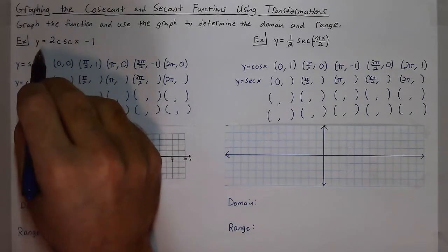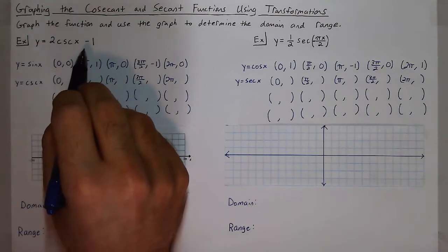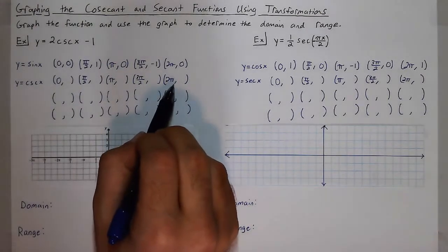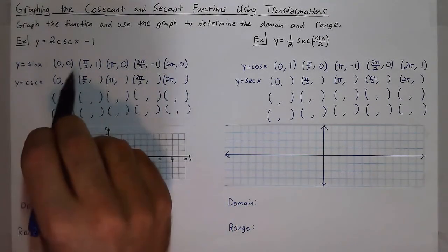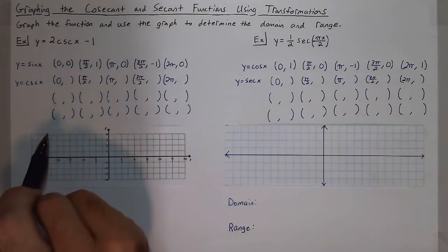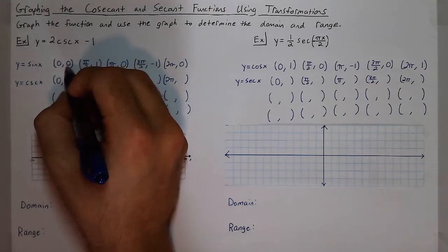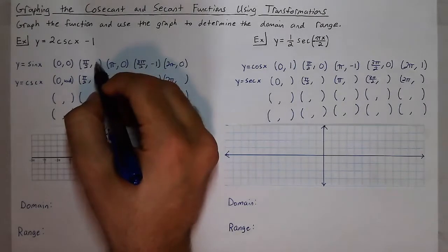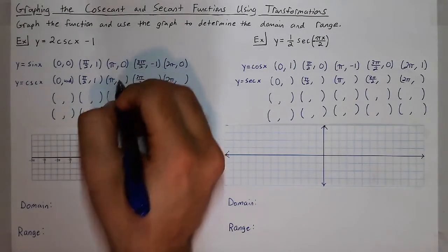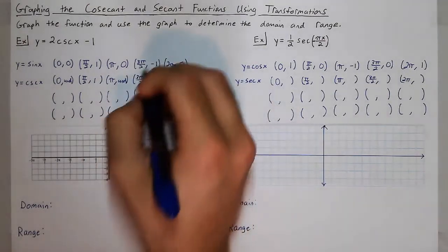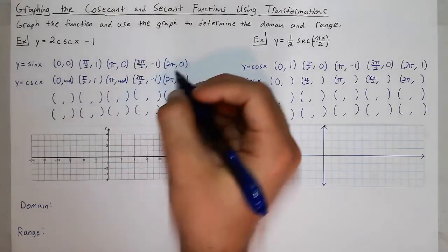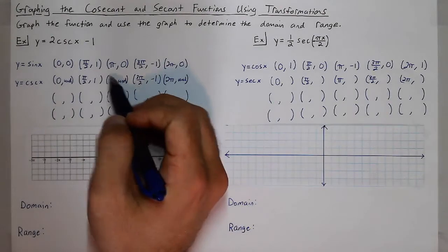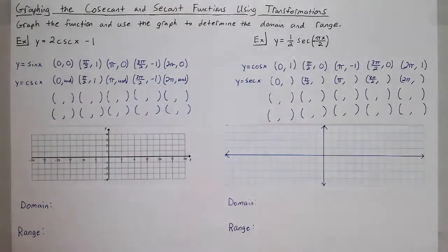I'll start with y equals 2 cosecant of x minus 1. Just like before, we'll start by listing out the key points of cosecant. The way I like to remember them is by remembering the key points for sine and taking the reciprocal of the y value. So 0 over 1 becomes 1 over 0, which is undefined — that's an asymptote. 1's reciprocal is 1. The reciprocal of 0 is undefined — another asymptote. The reciprocal of negative 1 is negative 1. So wherever you have 0, it makes an asymptote, and the ones match with ones and negative ones match with negative ones.